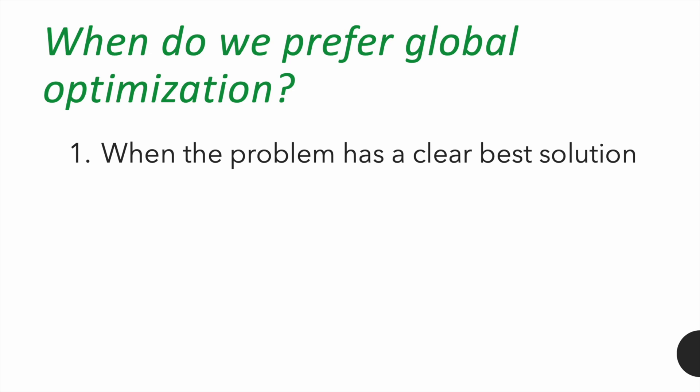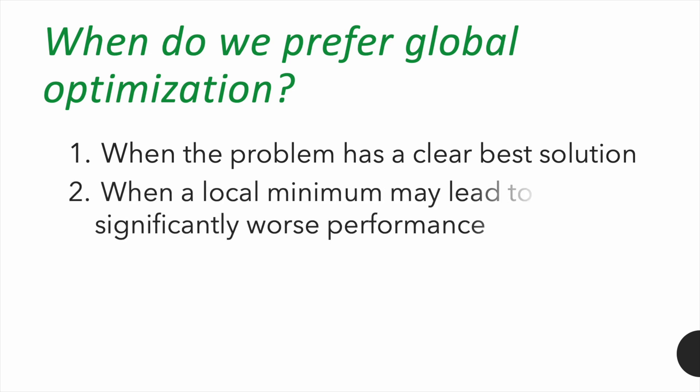Global optimization is also important when the objective function has many local minima, and some of them perform much worse than the global one. For example, in problems like route planning, network design, or drug discovery, finding the true global minimum can make a big difference in outcome.